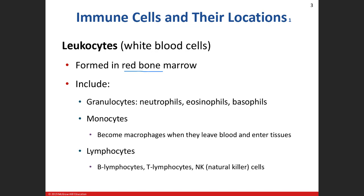Our lymphocytes — you've heard of B cells and T cells — that's what these are. You've got B lymphocytes, T lymphocytes, and then natural killer cells. That's what they do: they go around killing things or they're telling macrophages to go over there and kill that cell.